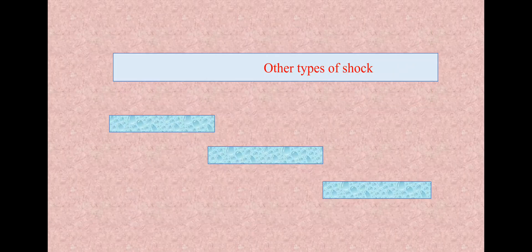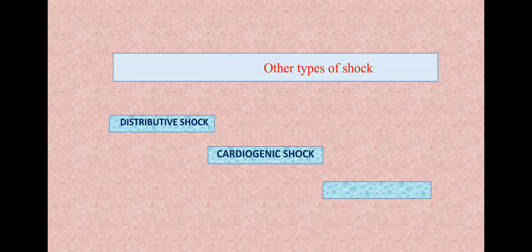So in the last video we discussed hypovolemic shock which is due to blood loss or plasma loss. Here we are discussing the other types of shocks: distributive shock, cardiogenic shock, and obstructive shock.